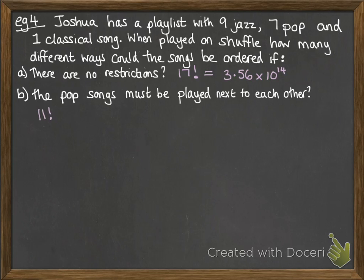That could be arranged in 11 factorial ways. Then within the seven pop songs, they could be shuffled in 7 factorial ways. So then we get this final answer of 2.01 times 10 to the 11.